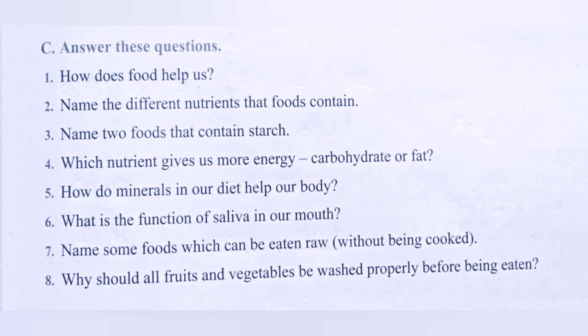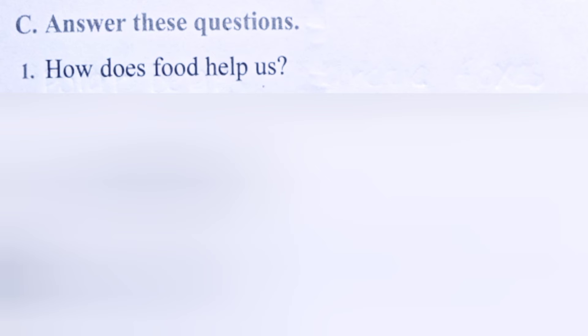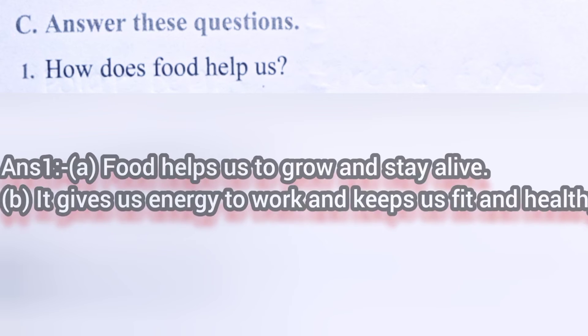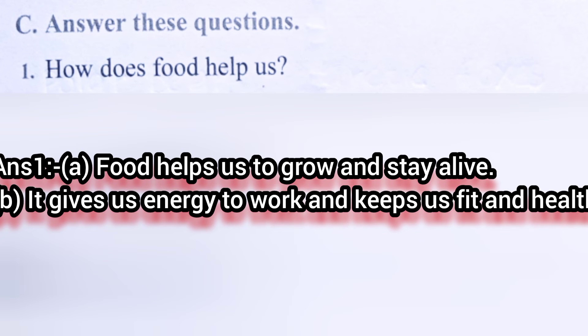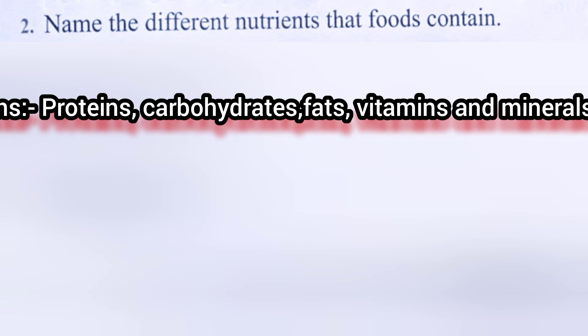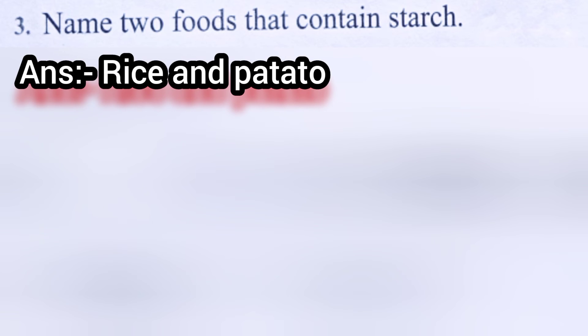Part C: Answer these questions. Question one: How does food help us? Food helps us to grow and stay alive. It gives us energy to work and keeps us fit and healthy. Question two: Name the different nutrients that foods contain. The answer is proteins, carbohydrates, fats, vitamins, and minerals. Question three: Name two foods that contain starch. The answer is rice and potato.